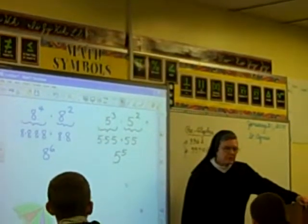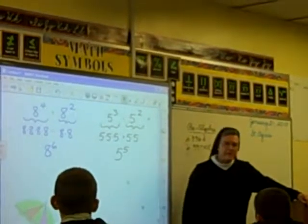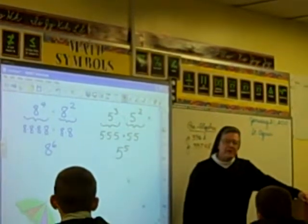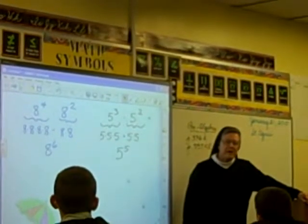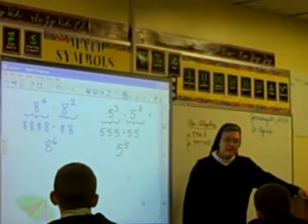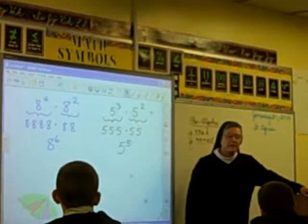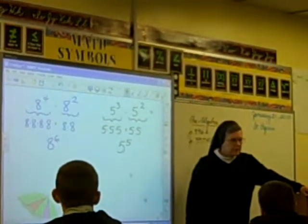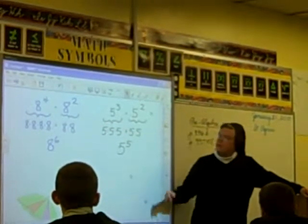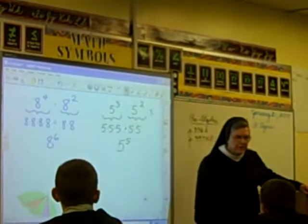Give me the rule. Gregory: when you have two bases that are the same but they have different exponents, you add the two exponents and make them one in a multiplication. Good, very good.